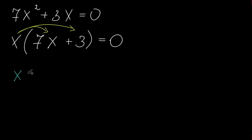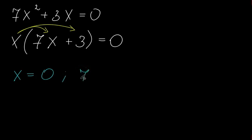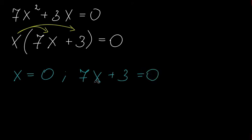Now when we have such an expression, x is equal to zero — if x equals zero the whole thing will equal zero. And 7x plus 3 should be equal to zero, so we need to solve this equation.